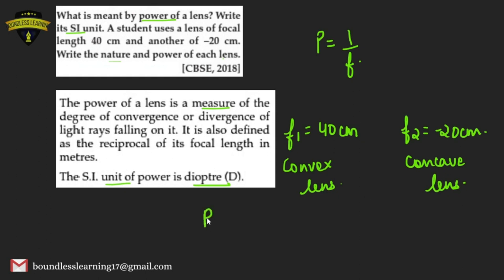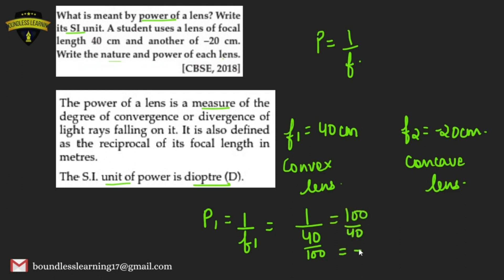Power of first lens = 1/f = 1/(40/100) = 100/40 = +2.5 diopters. Power of second lens = 1/(−20/100) = 100/(−20) = −5 diopters.